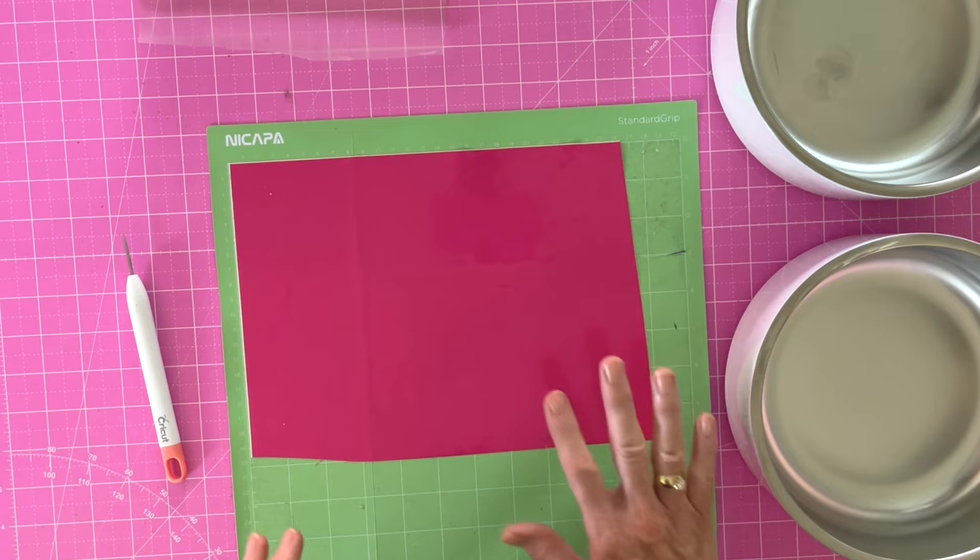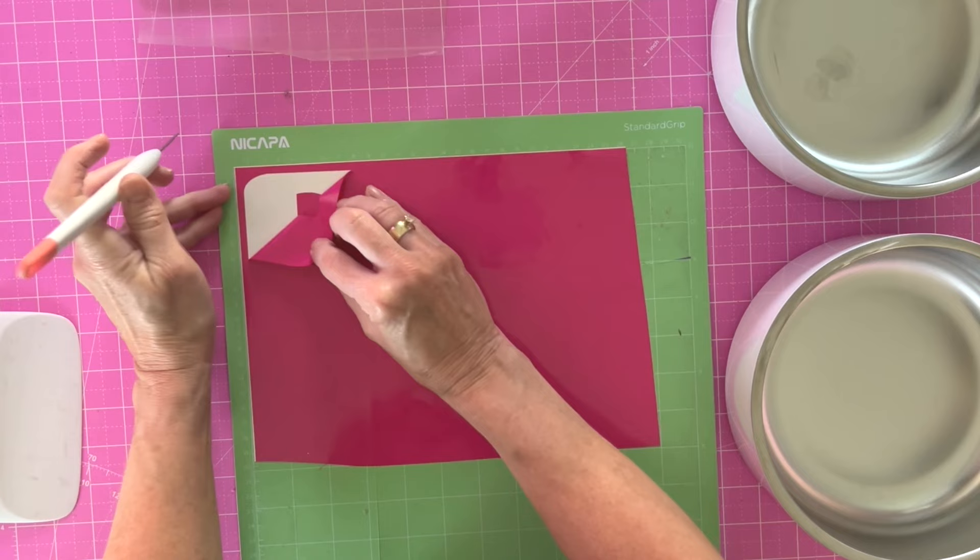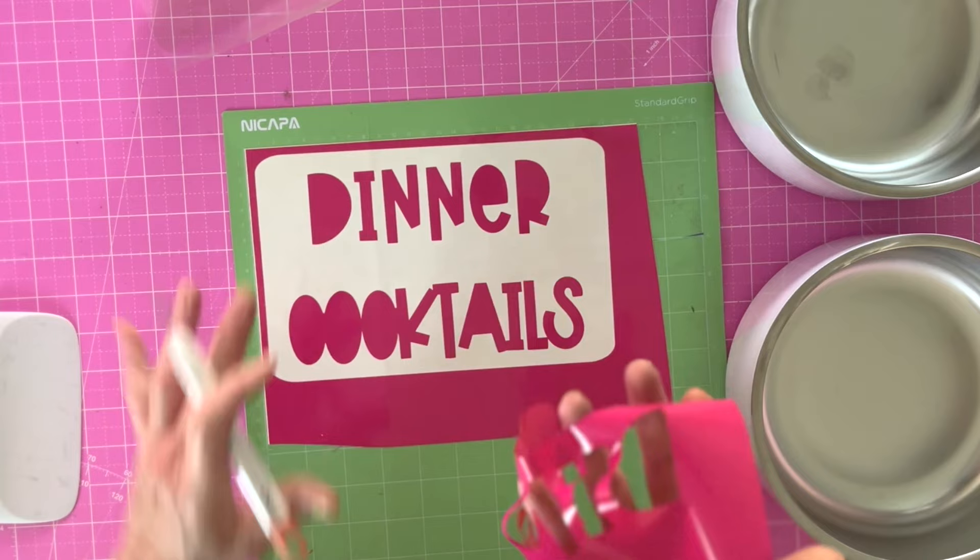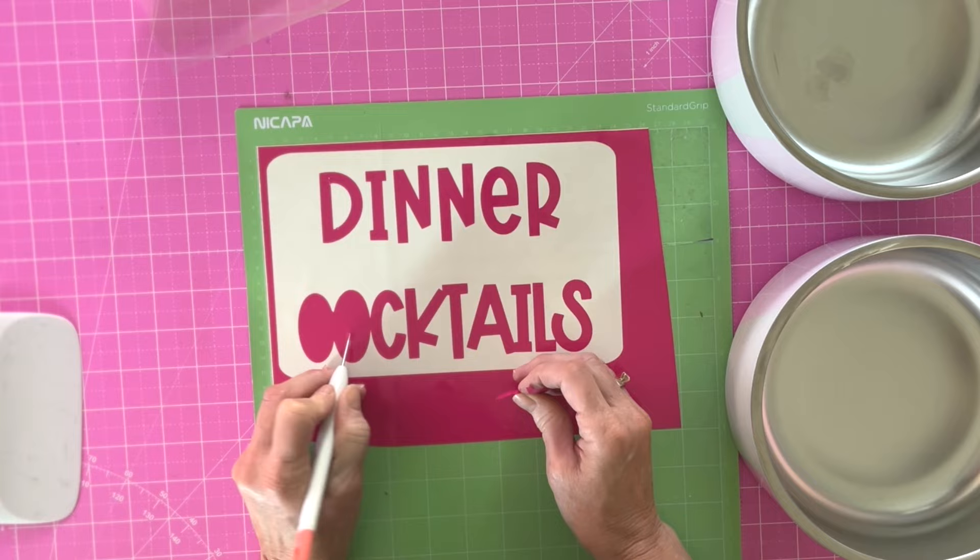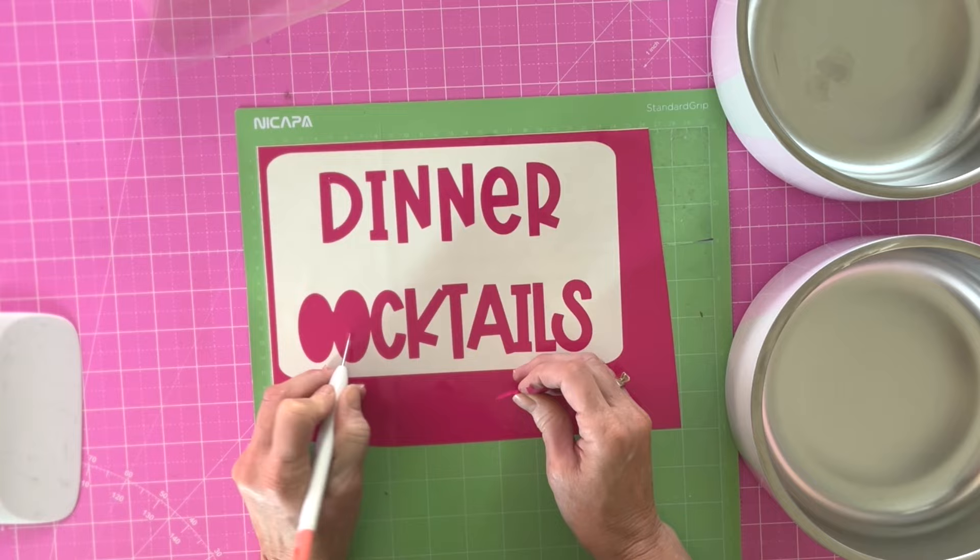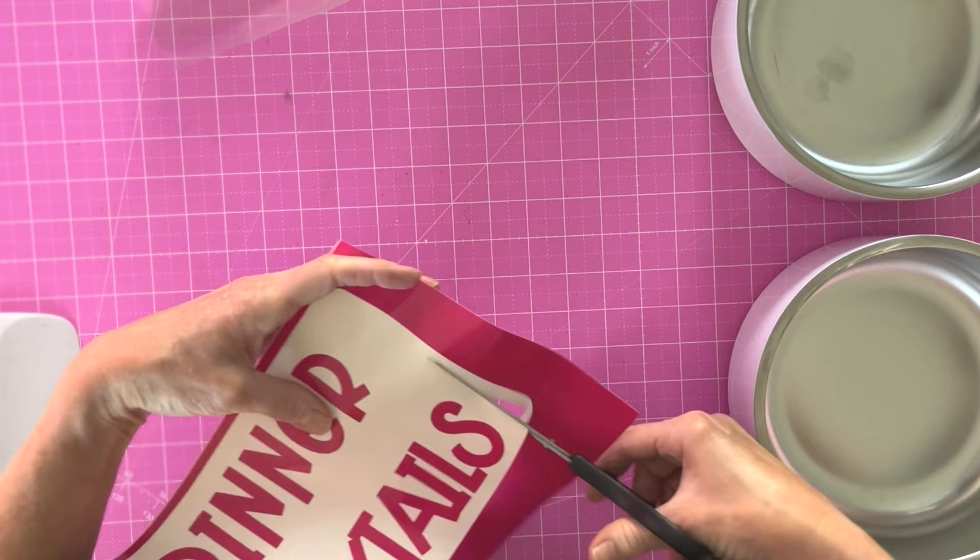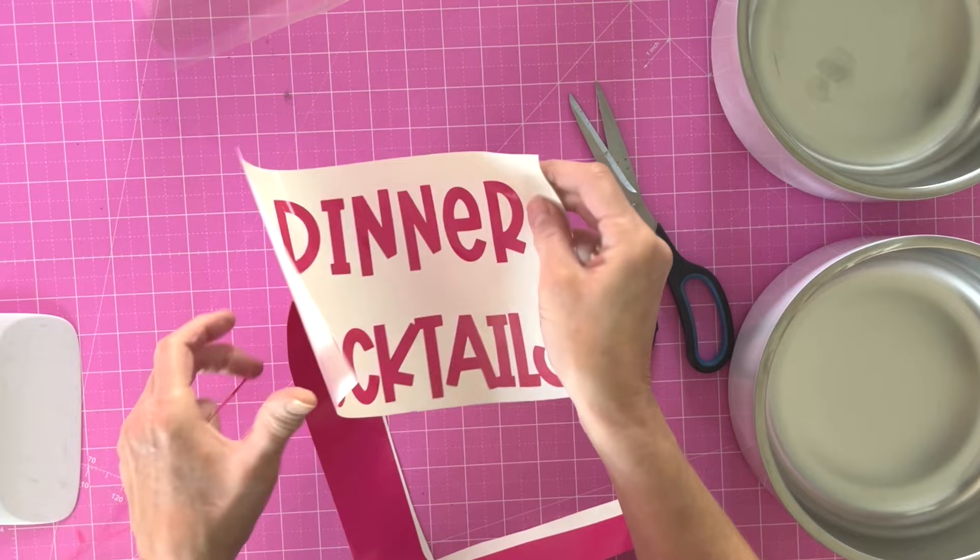So I like to weed on the mat, so I'm just going to use my scraper and just make sure that this is adhered well. Then I'm going to grab the corner of that box that we made and just peel this back. You can see how that weeding box makes it much easier. I'm not trying to wrestle this whole thing, so I can get rid of that. Now I need to weed out the centers. So if I wanted to save the rest of this, I can just take it off the mat and then just cut around this blank area. And now we have our separate pieces.